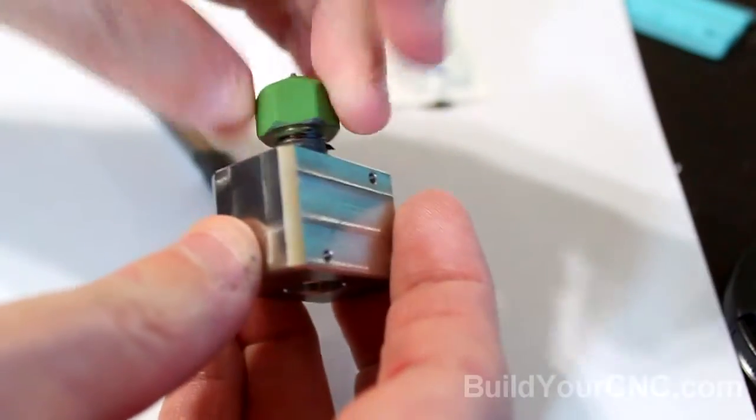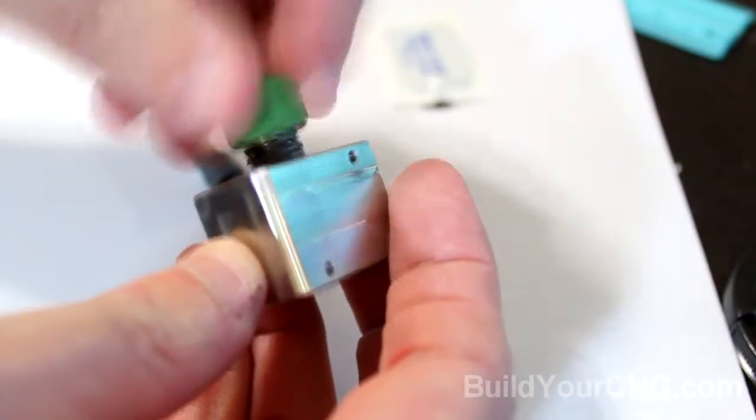Now you can thread on the nozzle onto the heater core. Do it by hand and then you'll have to get an adjustable wrench to put it in all the way. Take a 13 millimeter wrench and adjustable crescent wrench and tighten them.